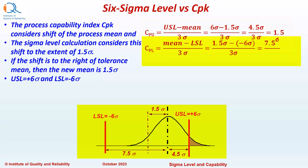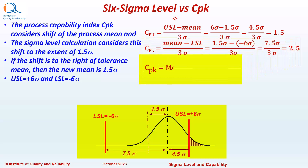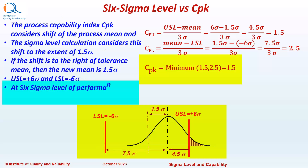CPL will be equal to mean minus LSL upon 3 Sigma, that is 1.5 Sigma minus (−6 Sigma) upon 3 Sigma, which equals 7.5 Sigma upon 3 Sigma, that is equal to 2.5. Therefore, CPK will be the lower of the two, which is equal to 1.5. At 6 Sigma level of performance, CP is equal to 2 and CPK will be equal to 1.5.